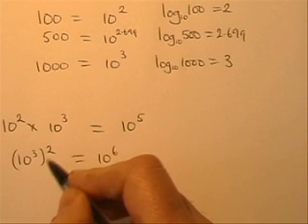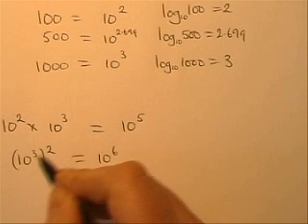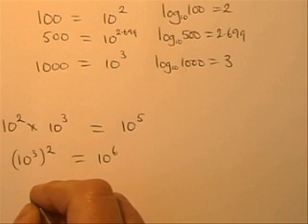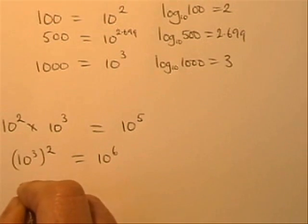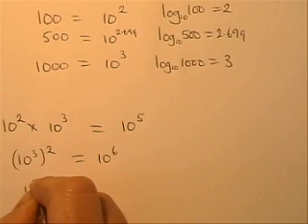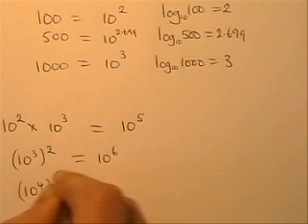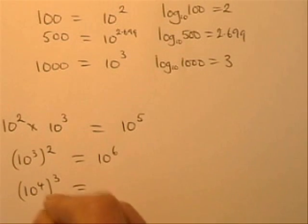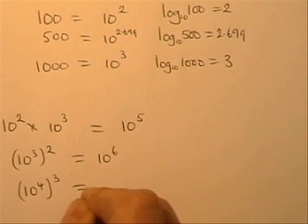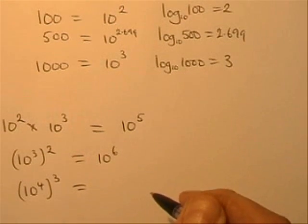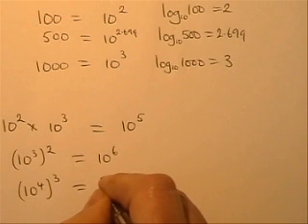So when you've got a power that's raised to a power, you multiply together the two powers. Similarly, if I had something like 10 to the power 4 and that was to be cubed, I would have 10 to the power 4 times 10 to the power 4 times 10 to the power 4. So I've got 3 lots of 4, which gives me 10 to the power 12.